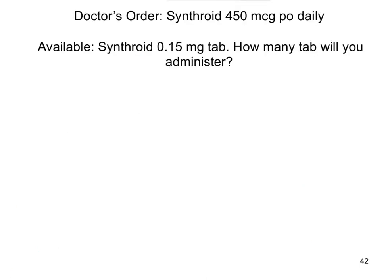Here's another problem. A doctor writes an order for a patient to take Synthroid, 450 MCG — which stands for micrograms — PO daily. PO, or per os, means by mouth. So the patient needs 450 micrograms of Synthroid by mouth daily. However, the pharmacy has Synthroid available in 0.15 milligram tablets. How many tablets would you administer to the patient?